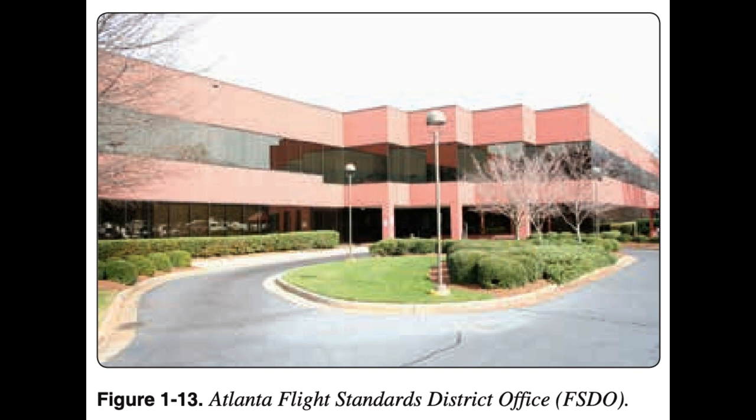The ASIs administer and enforce safety regulations and standards for the production, operation, maintenance, and modification of aircraft used in civil aviation. They also specialize in conducting inspections of various aspects of the aviation system, such as aircraft and parts manufacturing, aircraft operation, aircraft airworthiness, and cabin safety. ASIs must complete a training program at the FAA Academy in Oklahoma City, Oklahoma, which includes airmen evaluation and pilot testing techniques and procedures. ASIs also receive extensive on-the-job training and recurrent training on a regular basis. The FAA has approximately 3,700 inspectors located in its FSDO offices.